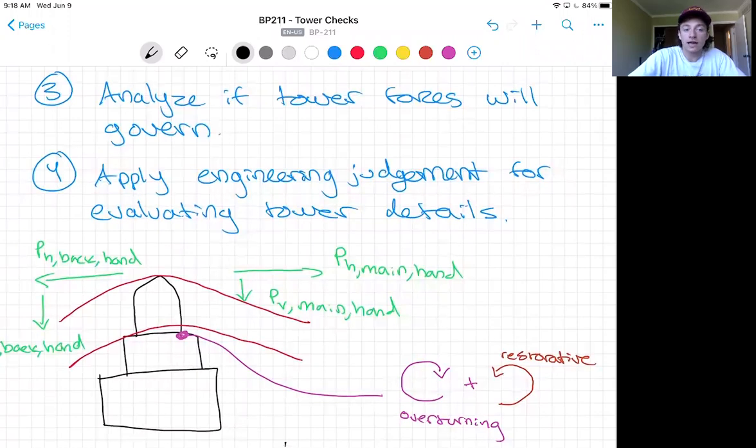We can first look at the backstay and mainspan forces at the tower in elevation view. Here, I've just drawn in handrail forces for clarity. Remember, there is a net horizontal force as a result of friction across the saddle and walkway. This force creates overturning moment as well as stress on the tower acting as a cantilevered beam.